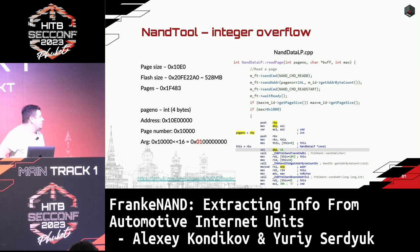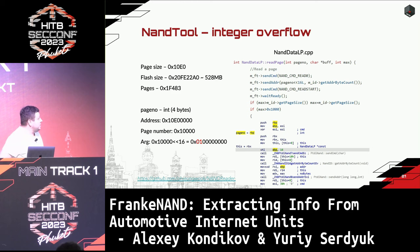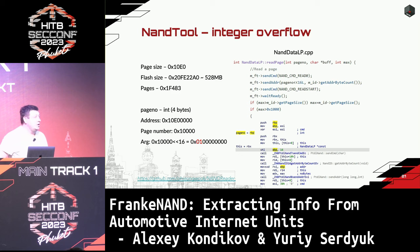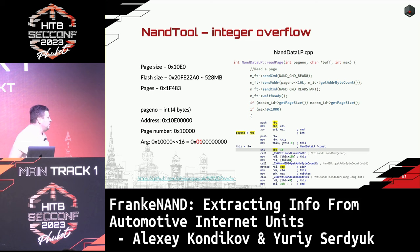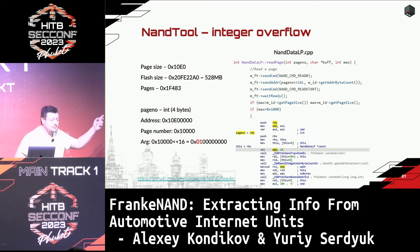First, we discovered a bug in NANDtool — an integer overflow bug. You can see a piece of code responsible for reading NAND memory. For pointing to pages, there is an argument called page number. This page number has size integer — only four bytes. The address 0x10E0000 is the offset in NAND memory where we see the same data. We can calculate the page number by dividing the address by the page size, giving page number 0x10000 hex. In the source code, the page number is shifted by 16, making our value exceed four bytes. That is why we see the full data repeated in the middle. We confirmed this with a disassembler: the EBP register stores the page number and it is only four bytes — after shifting, data is lost.